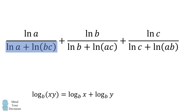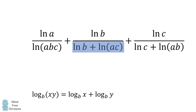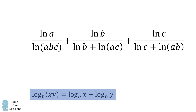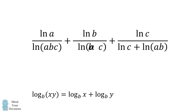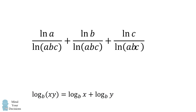We will now look at each denominator and use the product rule. We have a sum which we will convert into the product. The natural log of A plus the natural log of the product BC will be equal to the natural log of ABC. We do the same thing in the second fraction: the natural log of B plus the natural log of the product AC equals the natural log of ABC. In the third fraction, the natural log of C plus the natural log of the product AB also becomes the natural log of ABC.